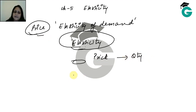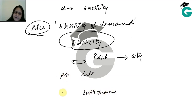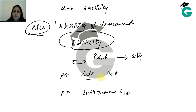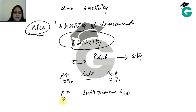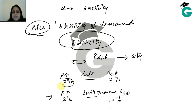Let me take an example. Suppose there are two goods: salt and Levi's jeans. If the price of salt increases by 2%, the quantity demanded falls by 2%. But for Levi's jeans, the price increases by 2% yet the quantity demanded falls by 10%. So which is more elastic? Levi's jeans — because with the same price increase, quantity changed much more compared to salt.